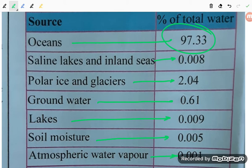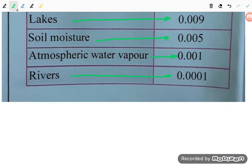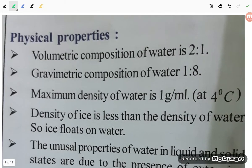Remaining, if you talk about the students, around three percent is other types of water including saline lakes, Iceland, polar ice, glaciers, ground waters, lakes, soil moisture - all are there.